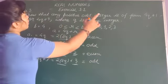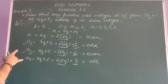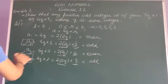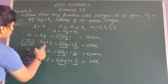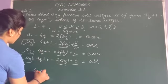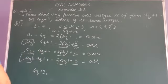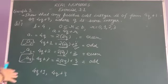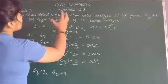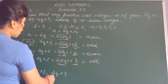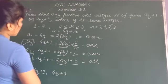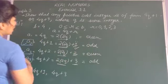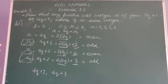अब आप देखिए, हमें क्या prove करना था? Positive odd integer prove करना था। तो हमारे पास A2 की value आई थी odd, और A4 की value आई थी odd। अगर हम यहाँ पर इनका representation देखें, तो A2 को हमने कैसे represent किया है? 4Q plus 1 से। और A4 को कैसे represent किया है? 4Q plus 3 से। तो इससे हमें यह proof मिलता है कि कोई भी positive odd integer 4Q plus 1 और 4Q plus 3 form में होगा। क्योंकि अगर वो 4Q plus 2 के form में होगा तो वो even हो जाएगा। इस तरह से हम इस type की questions को proof करते हैं।